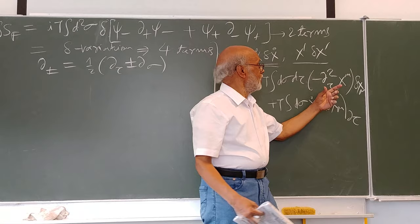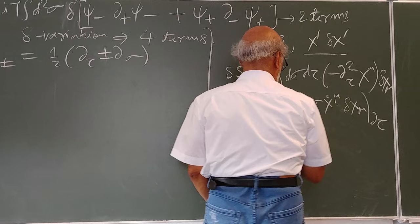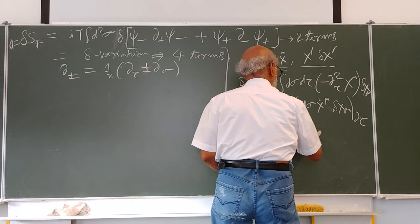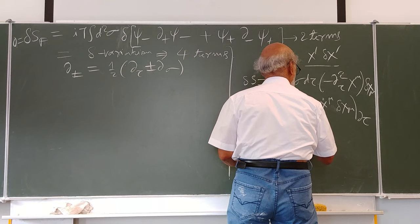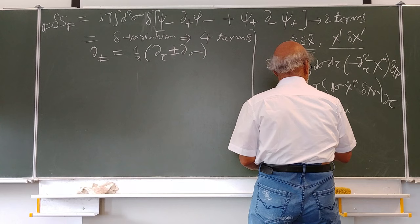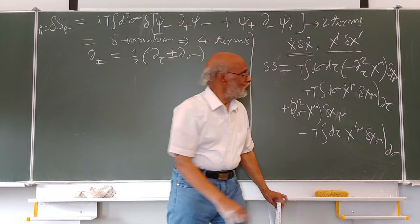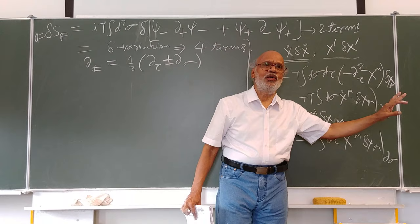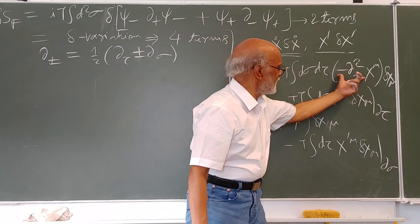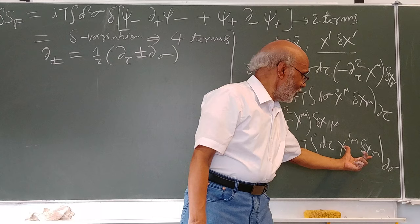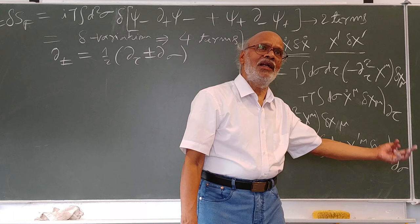Only this term survives. From this you similarly get other terms: delta x-mu. You also had another term d-tau x-prime-mu delta x-mu, which is at the space boundaries. When we consider only the purely bosonic part of the action and use the variation principle, we get two terms. These two terms added together gave us the equation of motion, and this other term is the space boundary term.